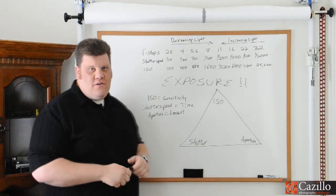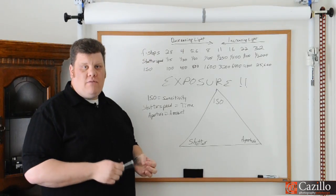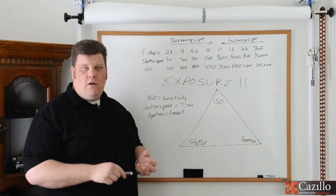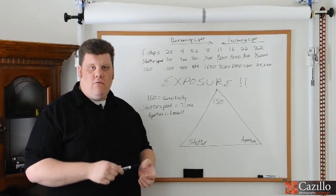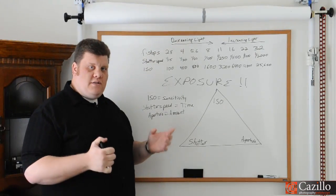First, ISO is the sensitivity of your sensor or of the film. Back in the day, you used to buy rolls of film, and those rolls were either ISO 100, 200, 400, 800 rolls of film. And you would shoot that entire roll. And so it's the same thing.